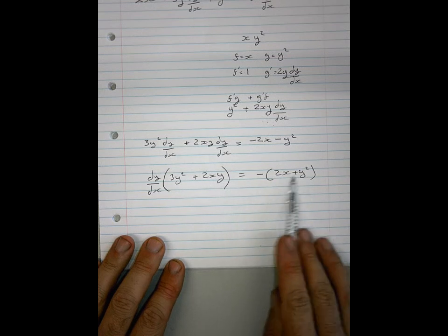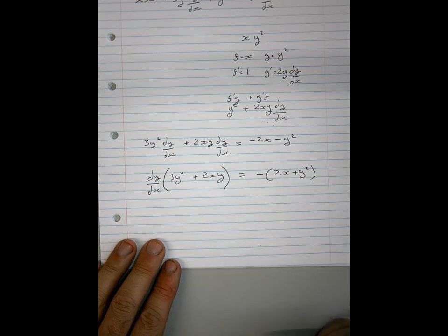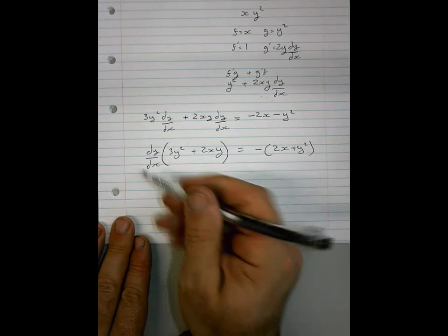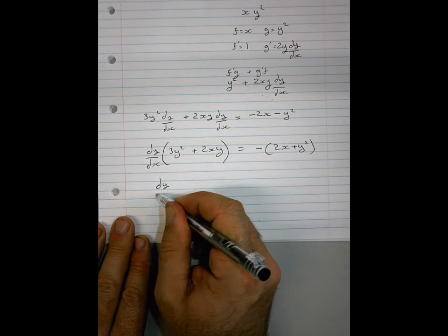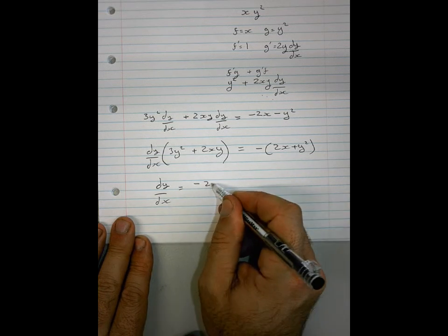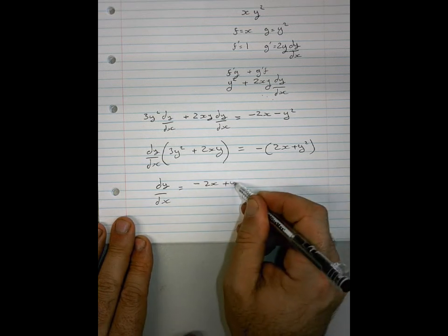You didn't have to do that bit in the brackets, but I do it because I like it because it's neat. And now I hope you can see that all I'm now going to do is divide by this. So I'm now left with dy by dx equals negative 2x plus y squared, remember to put that in brackets,